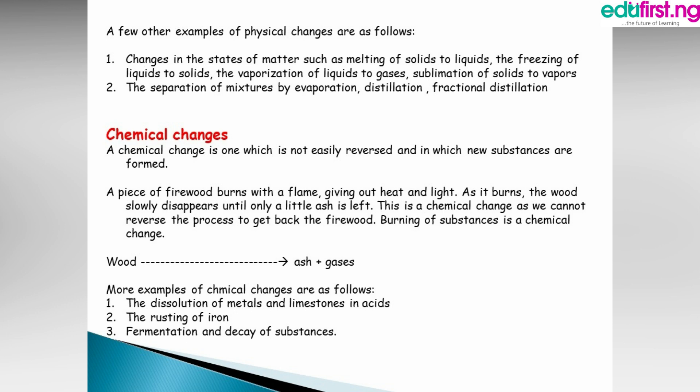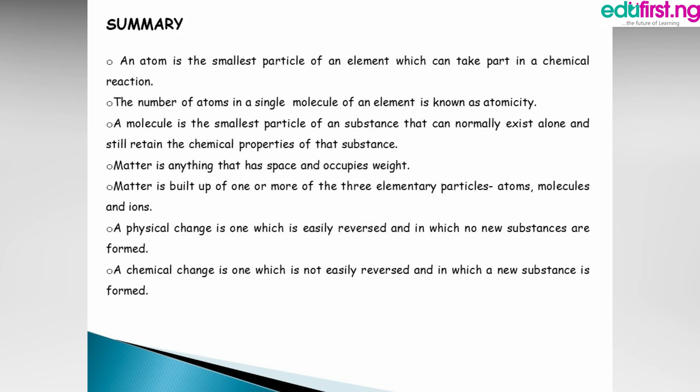In chemical changes, a new substance is formed and the process cannot be reversed. More examples of chemical change include the dissolution of metals and limestone in acid, the roasting of iron through an oxidation process, and the formation and decay of substances.